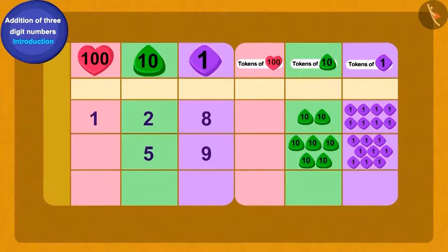First, we will write 128 and 59 using tokens. Is this correct, children? We have a total of 17 tokens of ones.